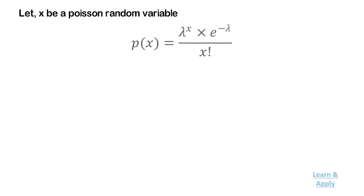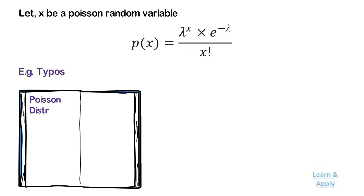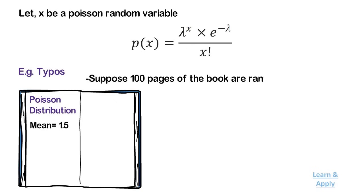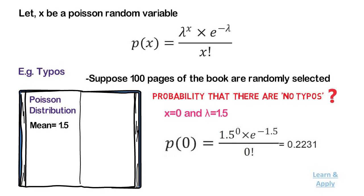Let x be a Poisson random variable. Then its probability mass function is: P(x) = λ^x × e^(−λ) / x!. For example, typos: the number of typographical errors in a big textbook follows a Poisson distribution with a mean of 1.5 per 100 pages. Suppose 100 pages of the book are randomly selected. What is the probability that there are no typos? Here x = 0 and λ = 1.5. P(0) = 1.5^0 × e^(−1.5) / 0! = 0.2231.